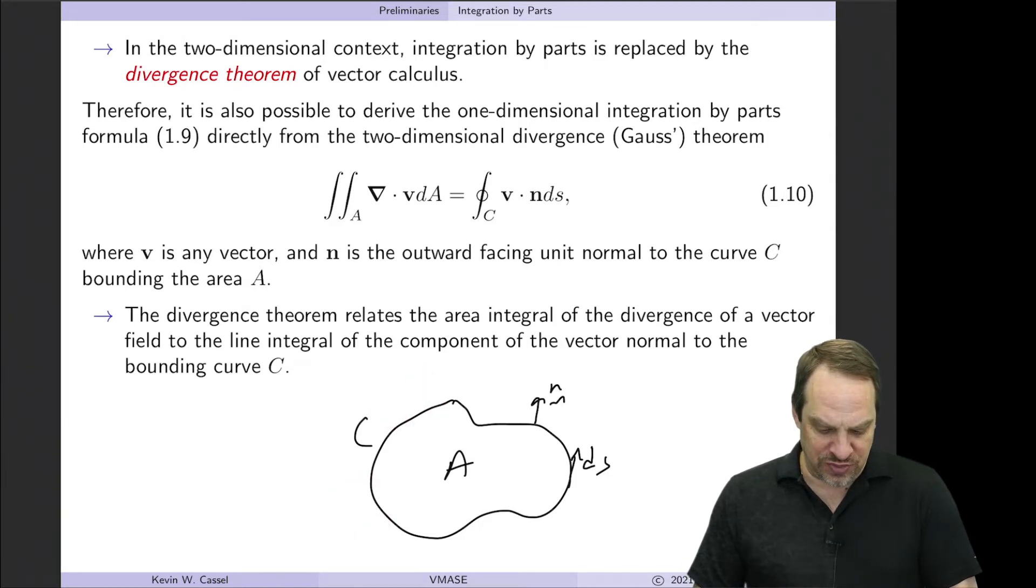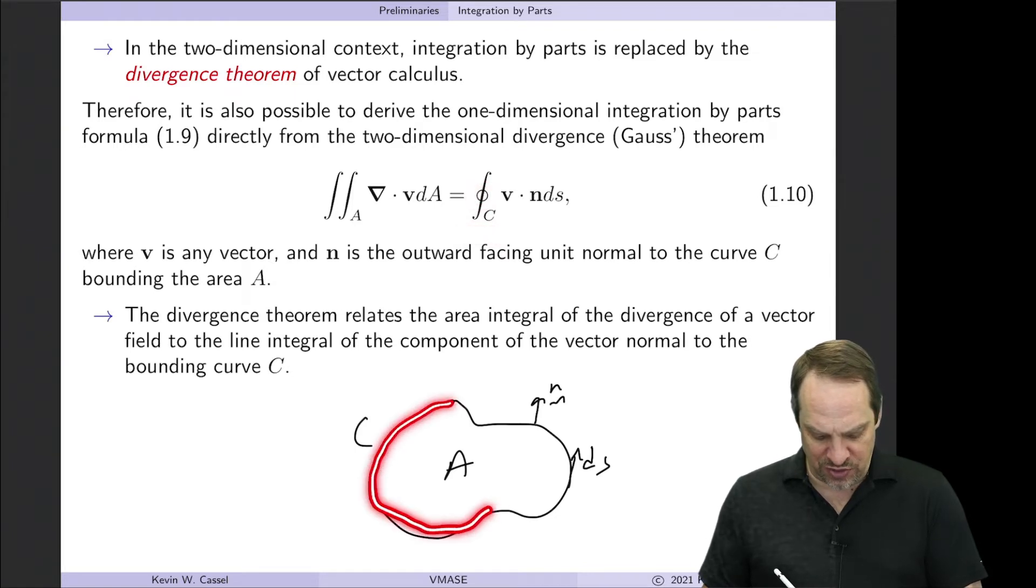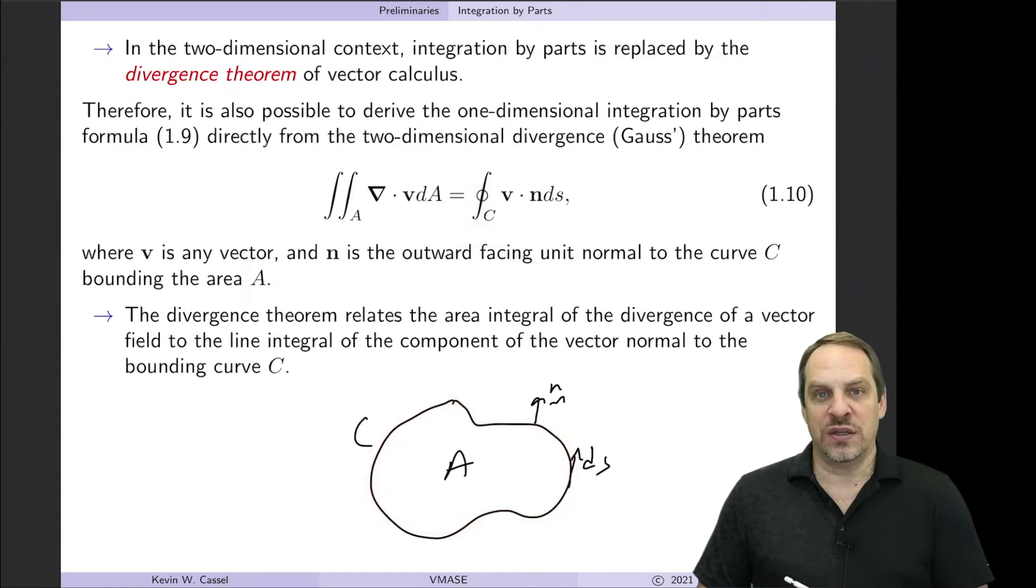Okay, so here's the divergence theorem. It's also known as Gauss's theorem. So it relates an area integral—that's a double integral over x and y over an area of the divergence of a vector field, ∇·V. So del is the gradient operator dotted with, so the dot product with a vector V integrated over an area. So that's an integral of the divergence within the area A. And that's equal to the integral around the curve C. Now this little loop-de-loop here means that we're going to integrate around the closed contour C that bounds the area A. And it's the integral of V·n ds.